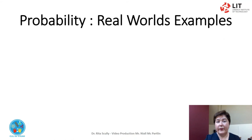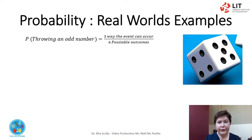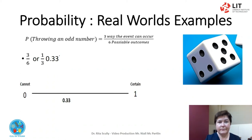Let's look at the probability of throwing an odd number. There are three ways the event can occur: 1, 3, or 5. There are six possible outcomes, so 3 over 6, or 1 over 2, or 0.5. Again, this can be seen on the probability line.